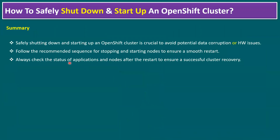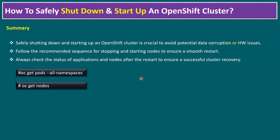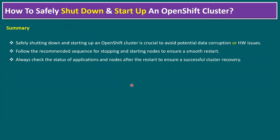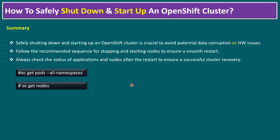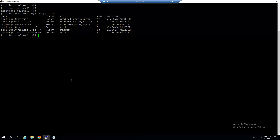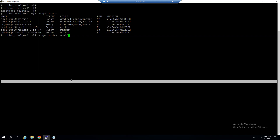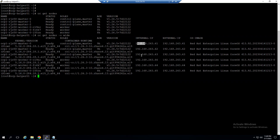Quick summary: safely shutting down and starting up your OpenShift cluster is crucial to avoid potential data corruption or hardware issues. Follow the recommended sequence for stopping and starting nodes to ensure a smooth restart. Always check the status of applications and nodes after restart to ensure successful cluster recovery. The key commands are: oc get pods --all-namespaces and oc get nodes. In some scenarios, there is a chance of network disconnections — after restart you may get different IPs, or the DHCP may assign a different IP instead of the original one.